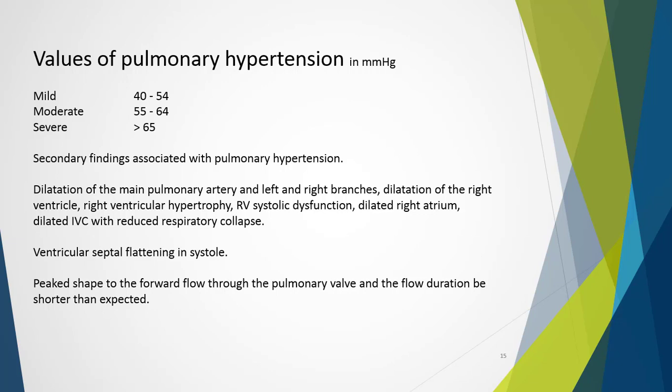Secondary findings may be associated with significant pulmonary hypertension. The sonographer may observe dilatation of the main pulmonary artery and branches, dilatation and hypertrophy of the right ventricle, RV systolic dysfunction, dilated right atrium, and dilated IVC with reduced respiratory collapse. Severe pulmonary hypertension may demonstrate RV pressure overload with ventricular septal flattening in systole. Dynamically, there may be a peaked shape to forward flow through the pulmonary valve with shorter-than-expected flow duration. A table of values for pulmonary hypertension ranges from mild to severe in mmHg.